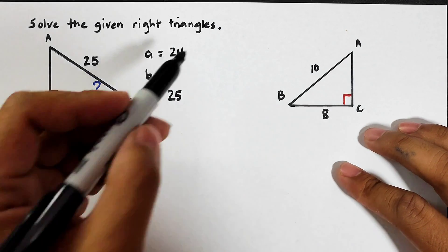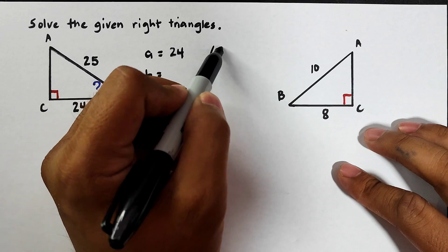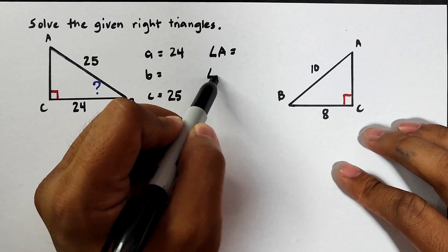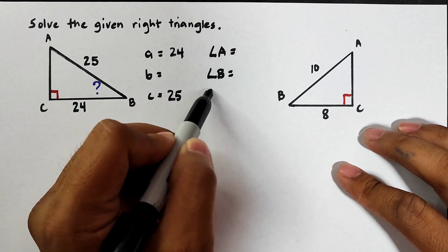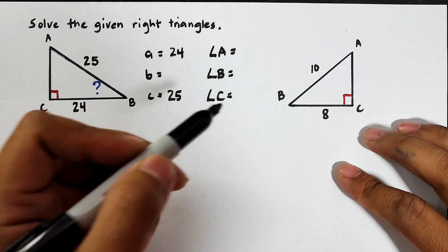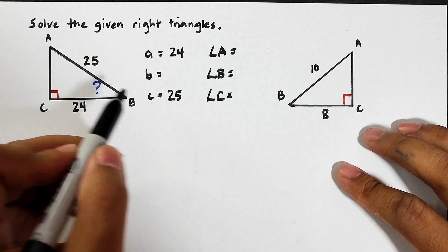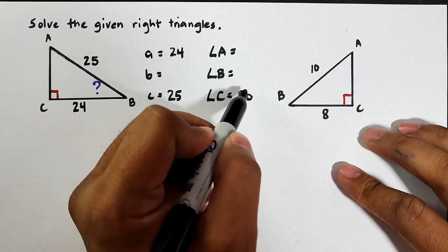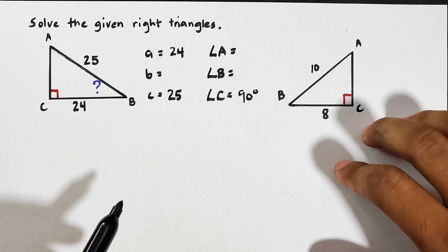Now let's go with the angles. Respectively this angle is angle C which is the 90 degrees and what's missing are the two angles.